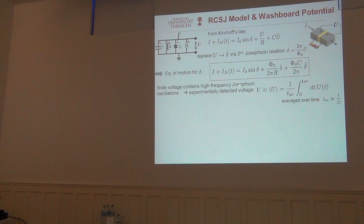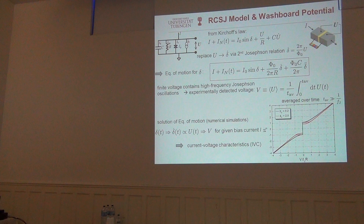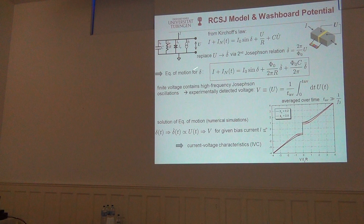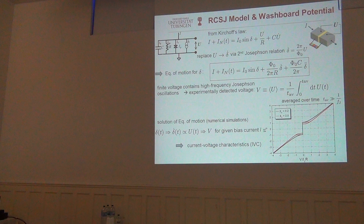This equation of motion contains very high-frequency Josephson oscillations which you cannot see in experiment. What you measure is the time-averaged voltage V, averaged over a time much larger than the inverse Josephson frequency. This gives the typical current-versus-voltage curves, obtained by numerical simulation solving the equation of motion to determine d delta/dt versus t, from which you get the voltage by averaging for any given bias current.